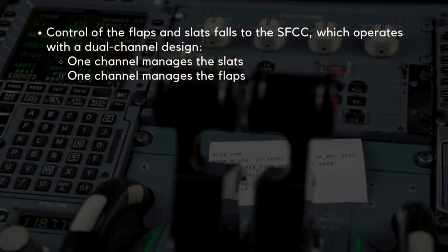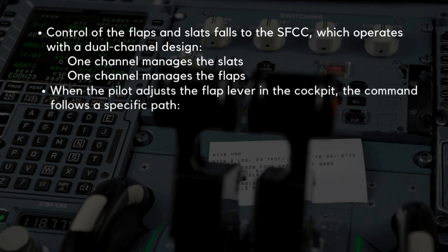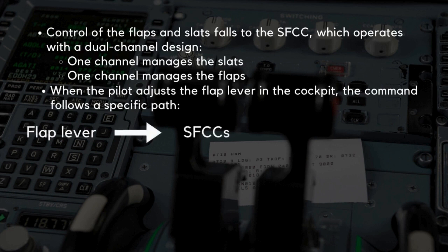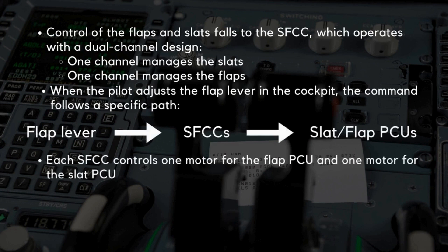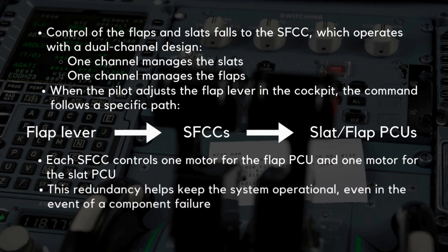Control of the flaps and slats falls to the SFCC, or Slat Flap Control Computer, which operates with a dual-channel design. One channel manages the slats, and the other manages the flaps. This separation ensures that each control surface operates independently, enhancing reliability. When the pilot adjusts the flap lever in the cockpit, the command passes through the SFCCs, which interpret and forward the command to the slat flap power control units. Each SFCC controls one motor for the flap PCU and one motor for the slat PCU, with this redundancy helping keep the system operational even in the event of a component failure.